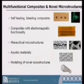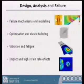Auxetic materials is a relatively new material in terms of the material science environment. It's a material that you can stretch in one direction and it will actually do the opposite in the other direction. Obviously, we also have to consider how we model these structures as well.